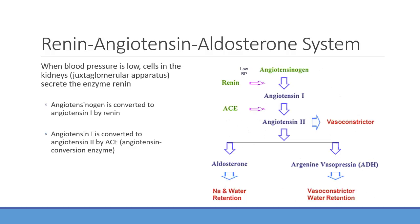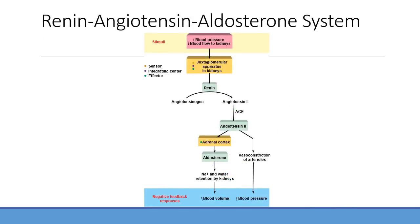Someone with the RAAS fully ramped up will have significant hypertension. Low blood pressure or low blood flow to the kidneys — from bleeding, dehydration, vomiting, diarrhea, or cardiovascular shock — triggers increased renin release. The body preferentially sends blood to the brain and heart; the kidneys detect low pressure and respond by releasing renin.